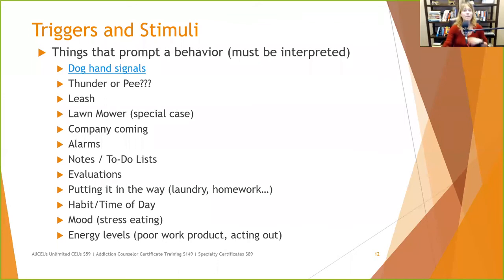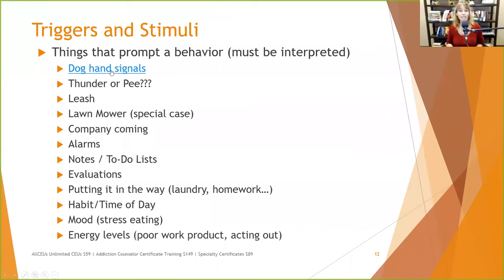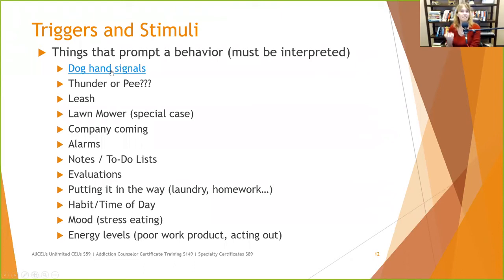Triggers that prompt a behavior must be interpreted correctly. When training dogs, we use hand signals for 'down,' 'sit,' and 'come.' An especially smart dog like a border collie may think a slightly different hand movement means something completely different. You need to make sure that whoever is interpreting the signals from you is interpreting them correctly. My mother had different looks she would give me — one look meant 'what did you just say?' and another with her tongue to the side of her cheek meant bad news. Make sure the person can effectively interpret what's going on.